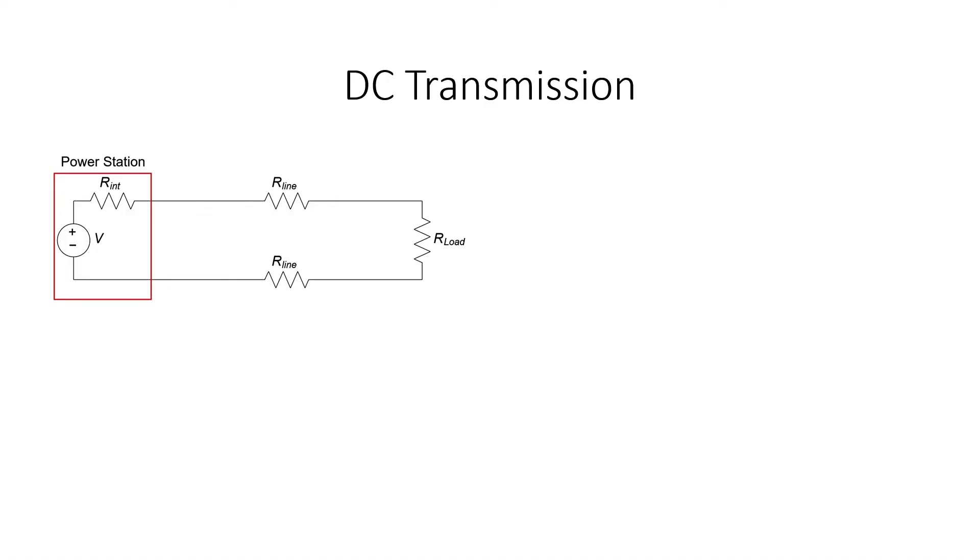Let's take a look at why AC transmission might be superior to DC transmission. Let's simplify our DC power station as a Thevenin equivalent voltage source and a Thevenin equivalent resistance, which I'm here calling just R internal. We know that we're going to have to deliver power to a load. Let's call the resistance of that load R sub load. And then let's call the resistance of the lines R sub line. I'm going to roll three of these resistors into one.